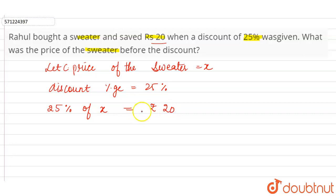25% means 25 divided by 100. 'Of' means multiplication. So 25/100 × x = 20. Now simplifying, 25 into 4 is 100, so x/4 = 20.